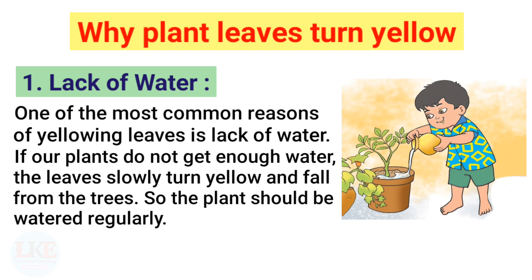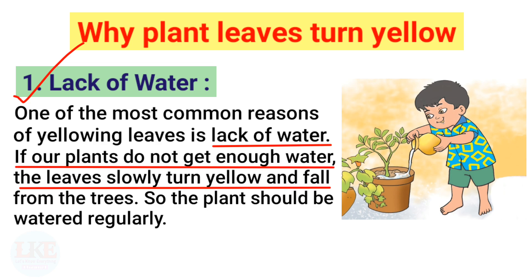First, lack of water. One of the most common reasons for yellowing leaves is lack of water. If our plants do not get enough water, the leaves slowly turn yellow and fall from the trees. So the plant should be watered regularly.